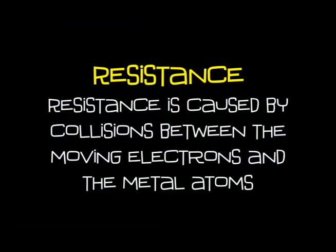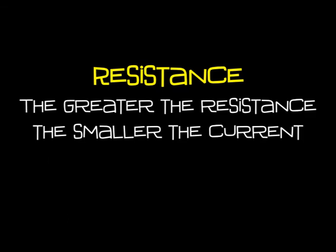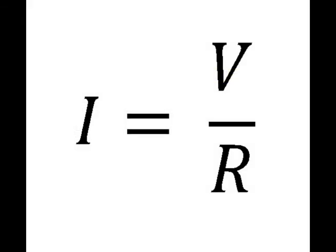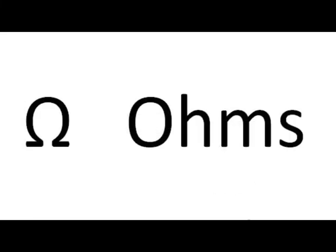Resistance is caused by collisions between the moving electrons and the metal atoms. The greater the resistance, the smaller the current. I can put these ideas together in a formula where I represents the current, V is the voltage, and R is the resistance — so I gets bigger as V gets bigger and I gets smaller as R gets bigger. Resistance is measured in units called ohms, sometimes represented by the Greek letter omega.